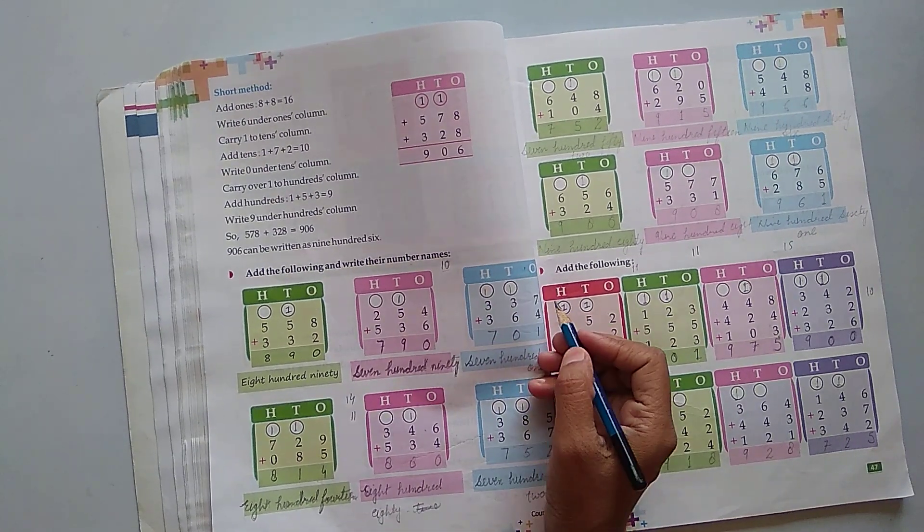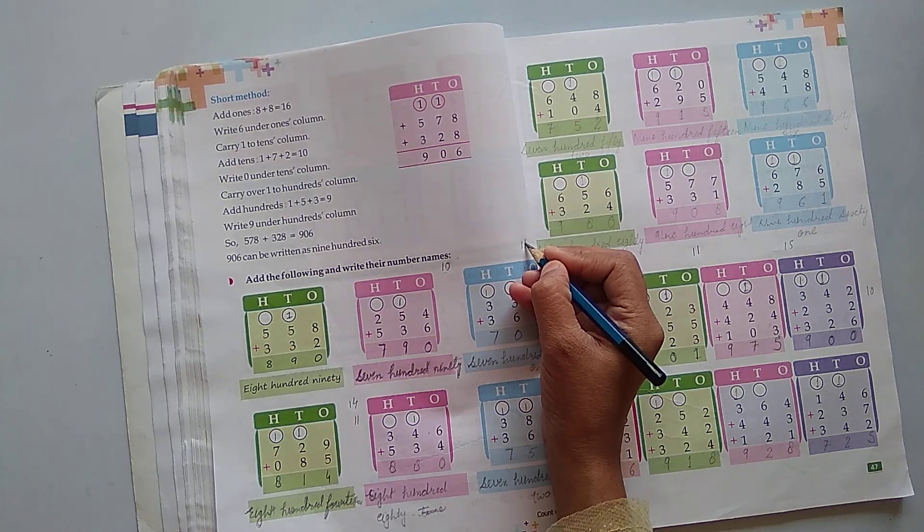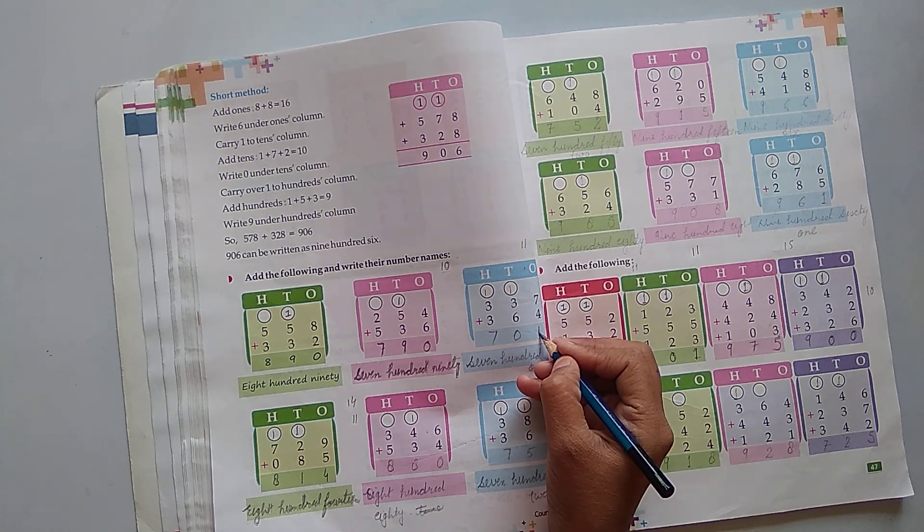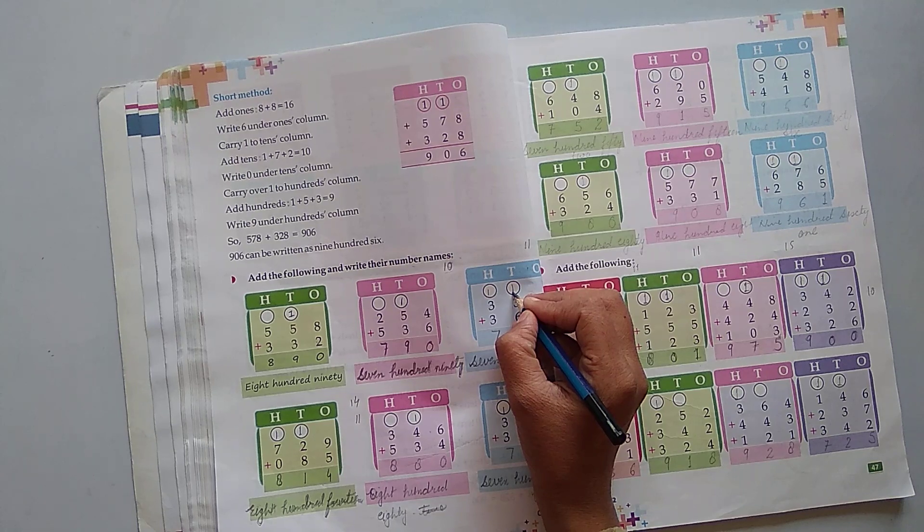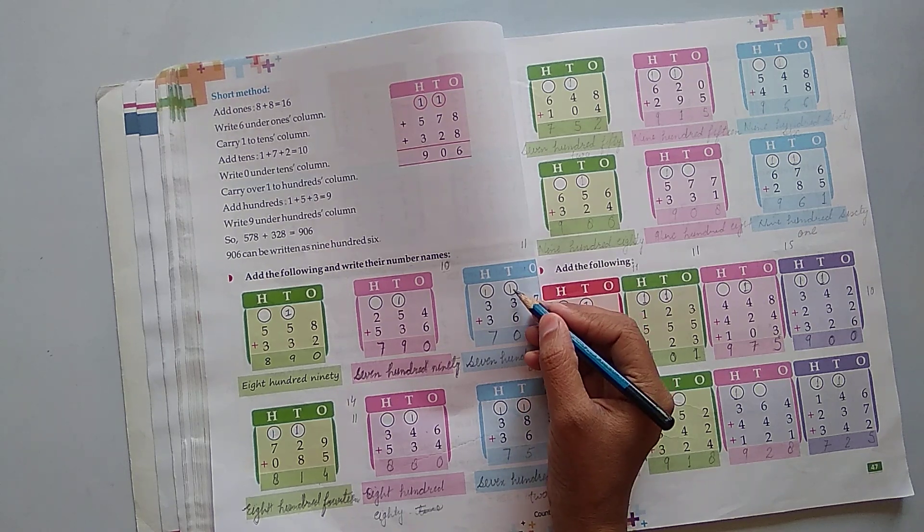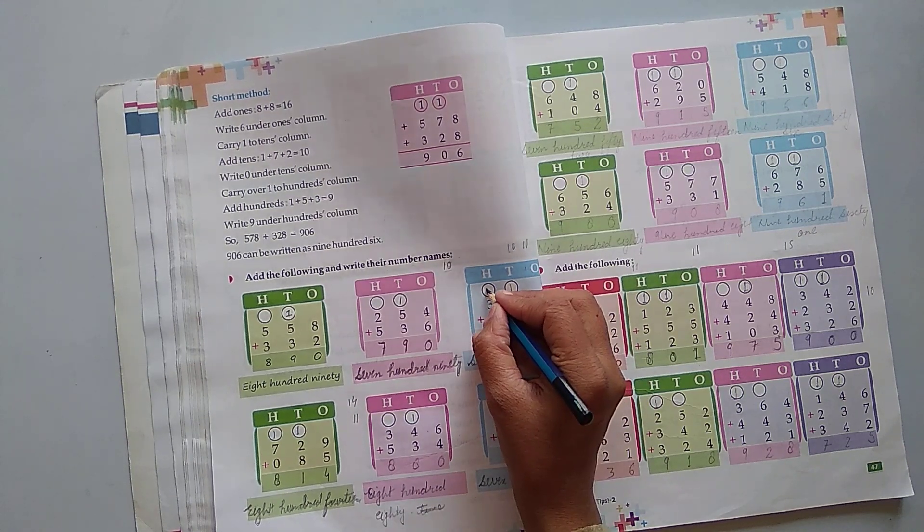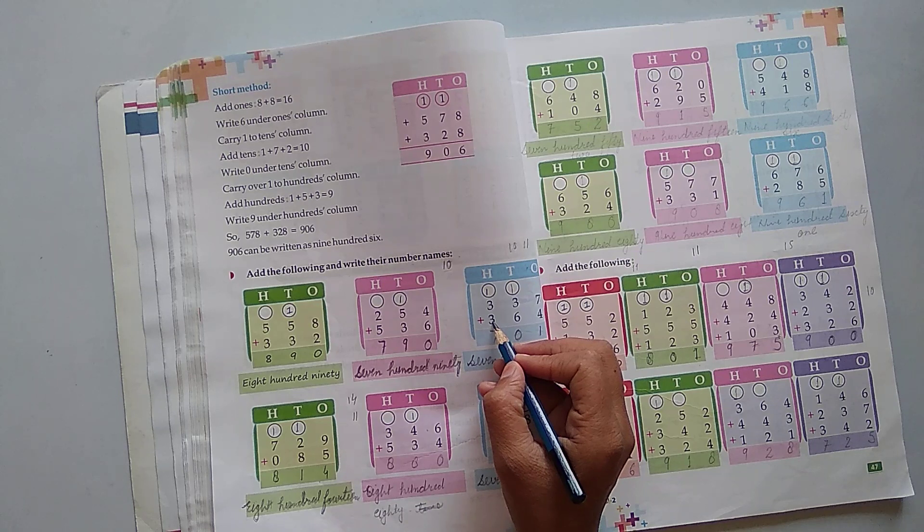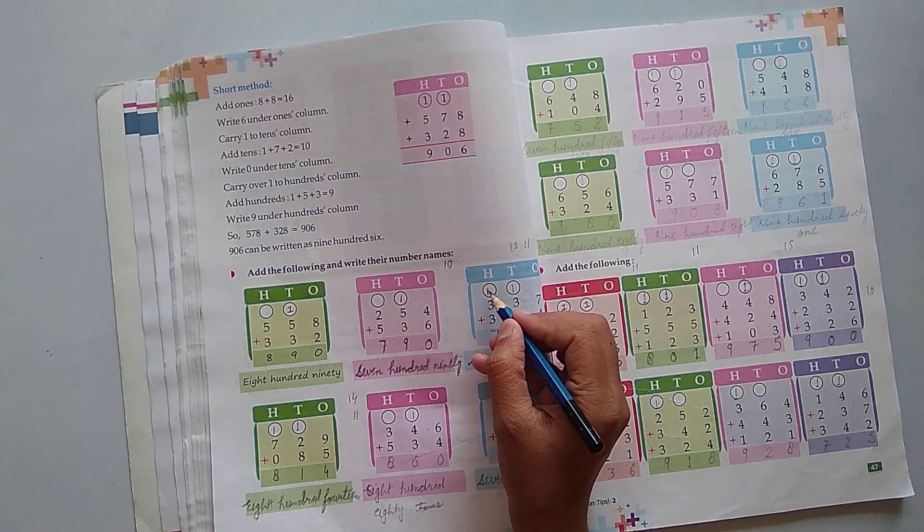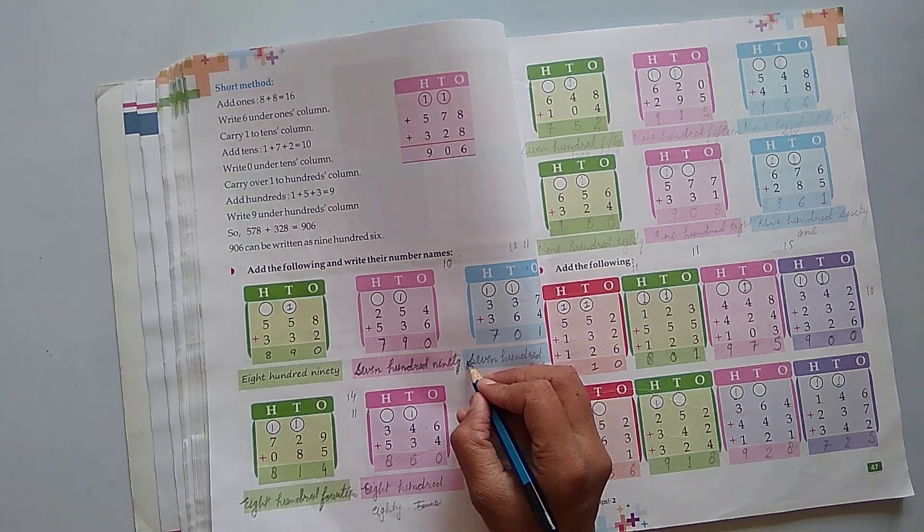Next, start from the right side. Add 7 and 4, it becomes 11. Write 1 here and give 1 carry here. Now add 6 and 3, it becomes 9, and also add carry 1 in it, it becomes 10. Write 0 here and give 1 carry here. Now add 3 and 3, it becomes 6, and also add carry 1 in it, it becomes 7. Write here 7. Hence, the answer is 701.